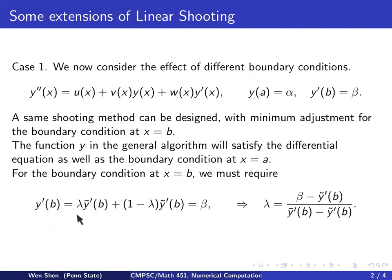which equals to lambda y bar prime, and 1 minus lambda times y tilde prime at b, that has to be equal to beta. So only this part is changed when you check the second boundary condition. And then this gives us a slightly different formula to compute for lambda, the coefficient.